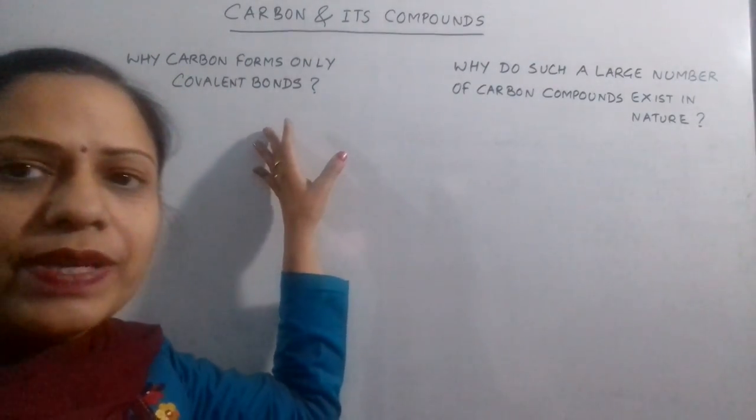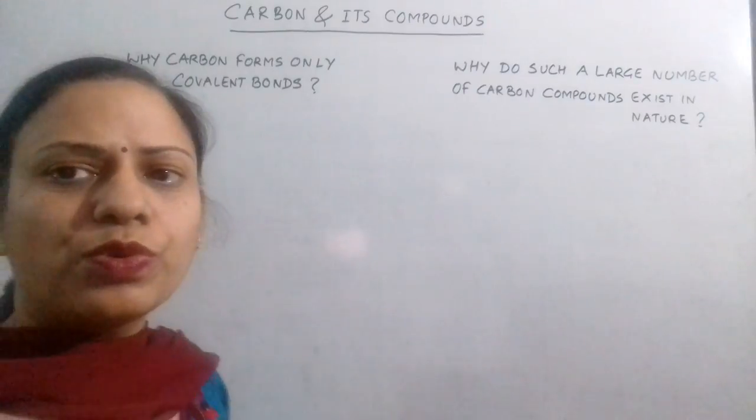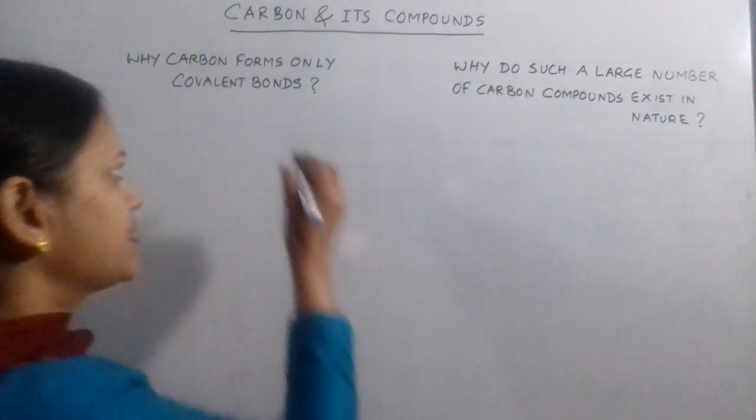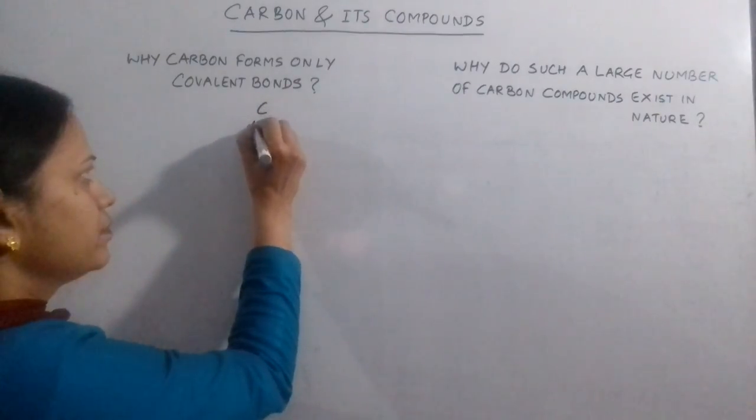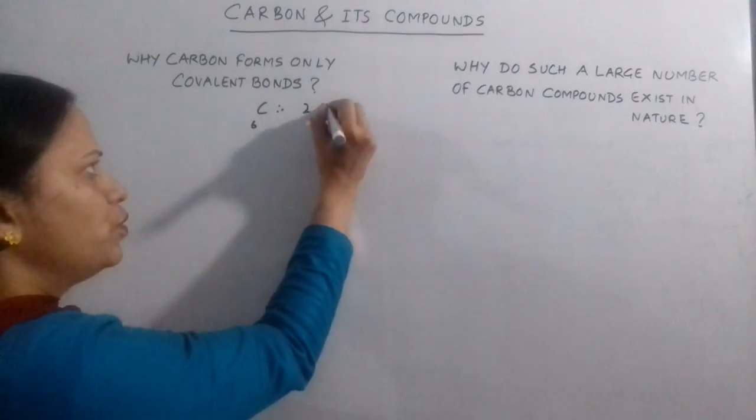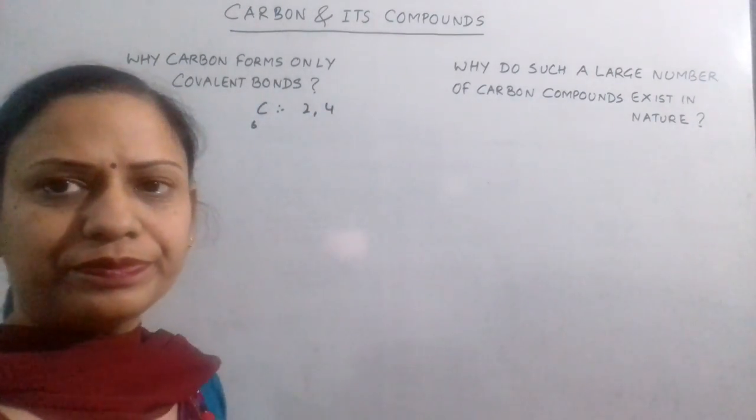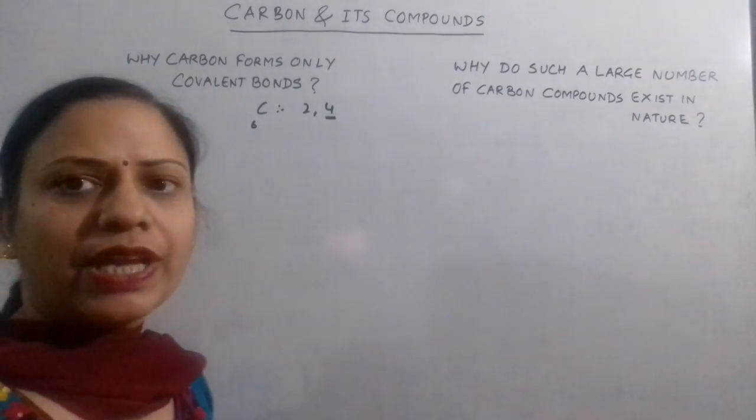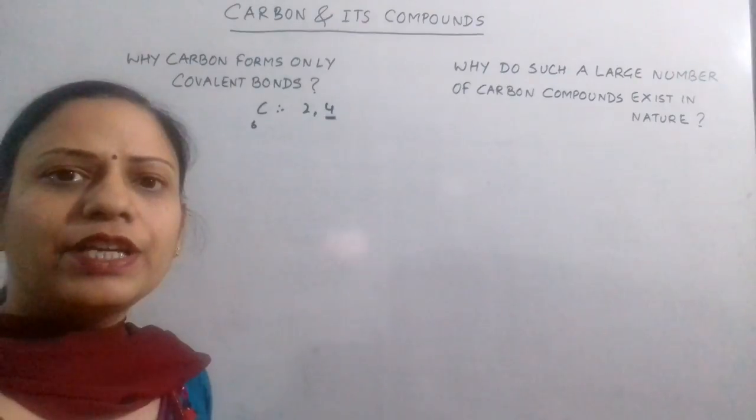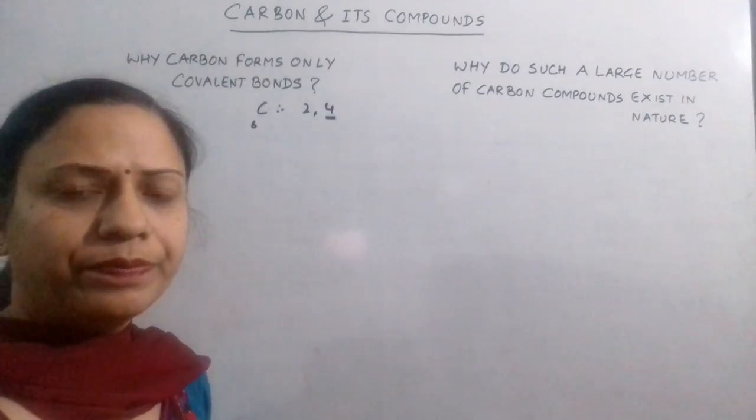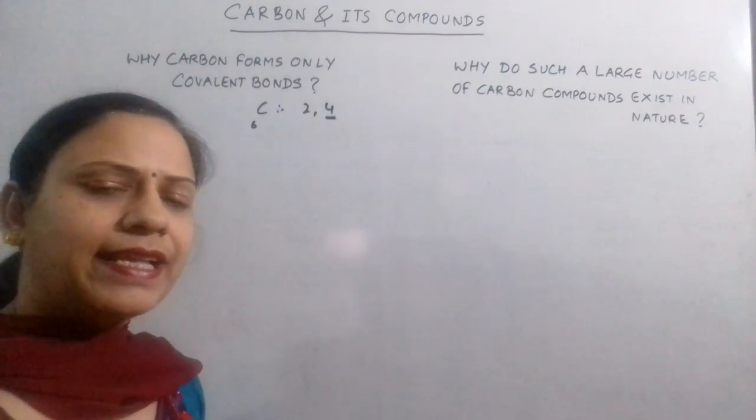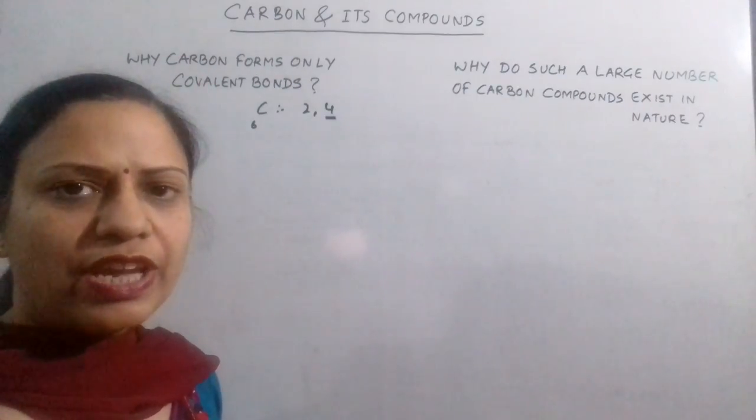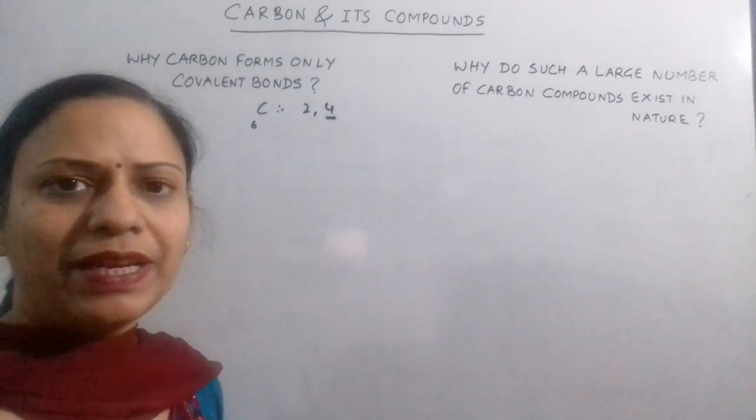Coming to the first question, why carbon forms only covalent bonds. The atomic number of carbon being 6, the configuration is 2, 4. Having 4 electrons in the outermost shell means that carbon shows a valency of 4. It has the tendency to gain 4 electrons, lose 4 electrons, or share 4 electrons. These are the 3 possibilities.